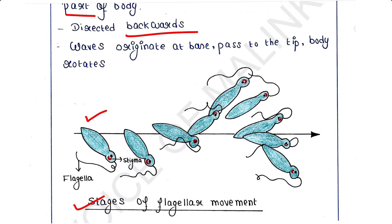Please see this picture carefully. This is the Euglena — this is the anterior part of the body and this is the posterior part. The flagellum is present in the anterior part of the body and it is directed backward. A series of waves originate at the base of the flagellum.